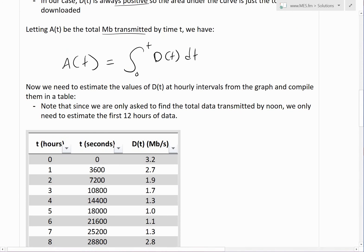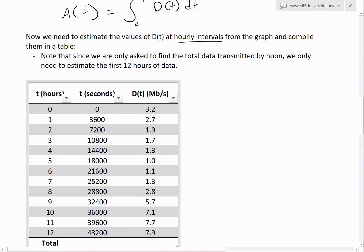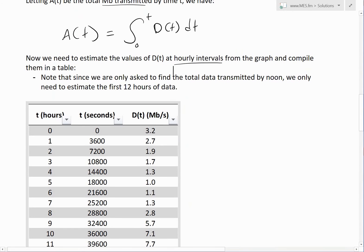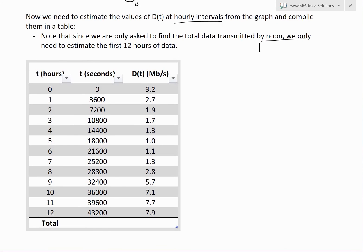And now we basically need to estimate the values of D(T) at hourly intervals. That's one way we could do it at hourly, just the easiest way from the graph and compile them in a table. And again, from this curve, it's pretty smooth data, so you could apply trapezoidal or the Simpson's rule. So now if we make a table, but note that also since we are only asked to find a total data transmitted by noon, we only need to estimate the first 12 hours of data.